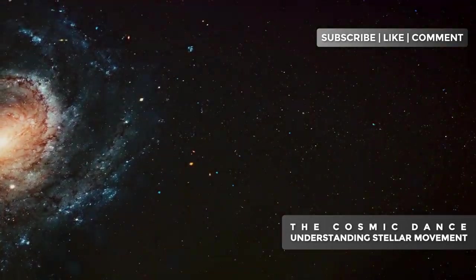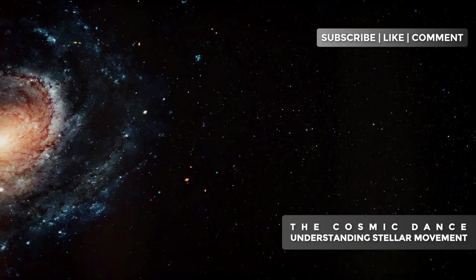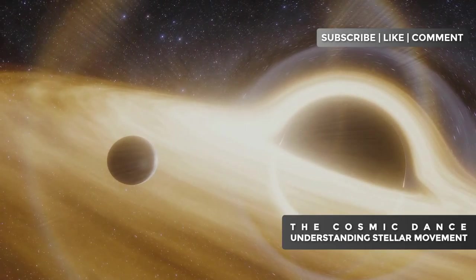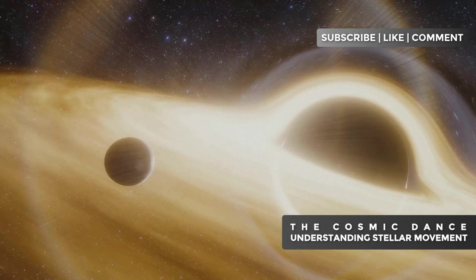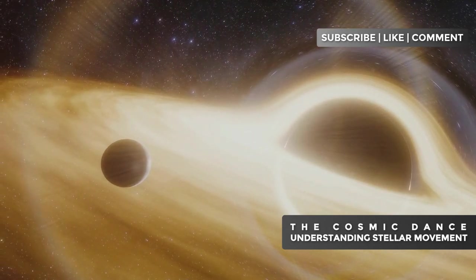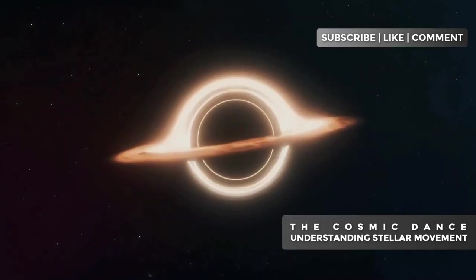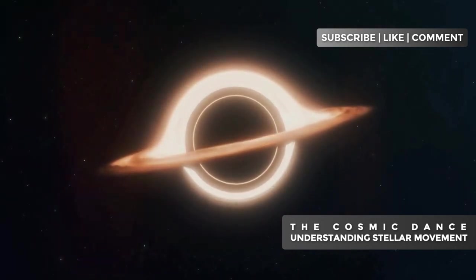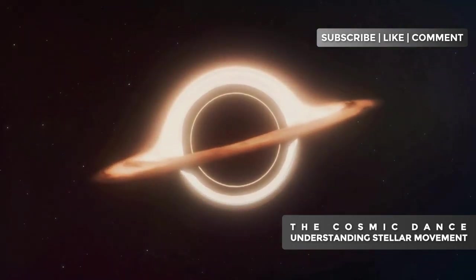Some stars have such eccentric orbits that they make dangerous dives towards the galactic center. A notable example is the star S2, which orbits very close to the supermassive black hole at the center of our galaxy. Its highly elliptical orbit brings it to within just 17 light hours of Sagittarius A at its closest point.